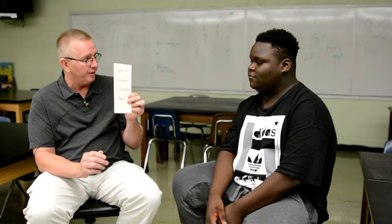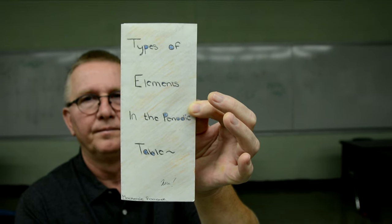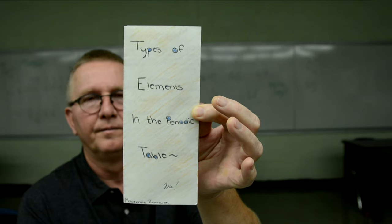We are going to present the information on the periodic table in a pamphlet. The pamphlet has three panels on the inside: one is about metals, one is about non-metals, and one is about metalloids. You're going to get this information from a couple of sheets — information sheets about metals, non-metals, and metalloids — and put the important bits inside these panels. The front cover has a title: Types of Elements in the Periodic Table.